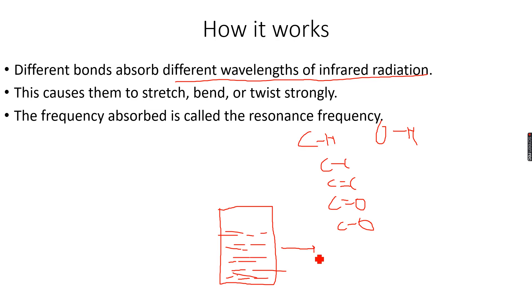We have a detector over here. This is the emitter, let's label it E, and this is the detector, let's label it D. Obviously, if some wavelengths are being absorbed by the bonds present in the compound, then those wavelengths are not reaching the detector. The detector is detecting some particular wavelengths.